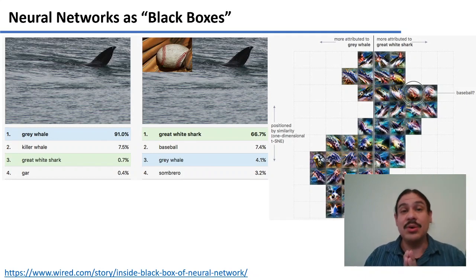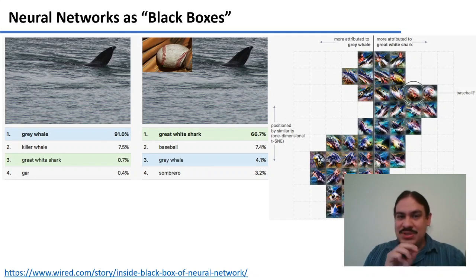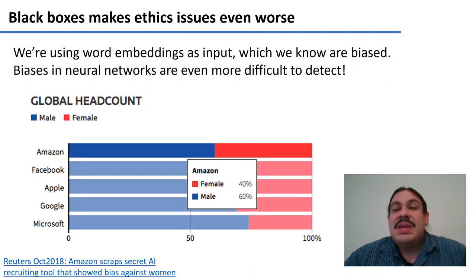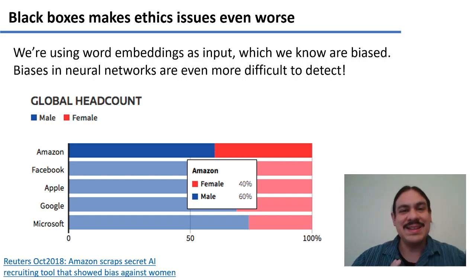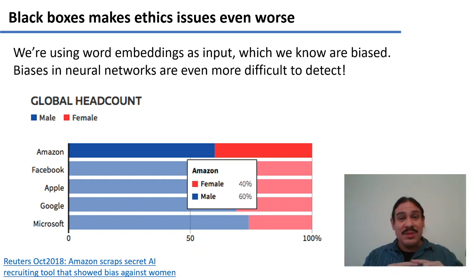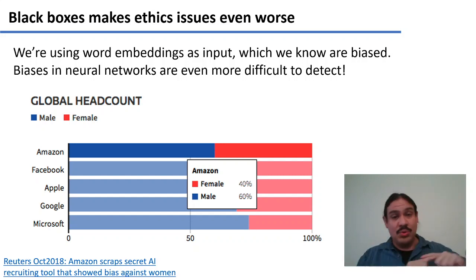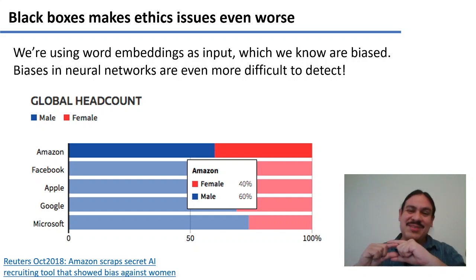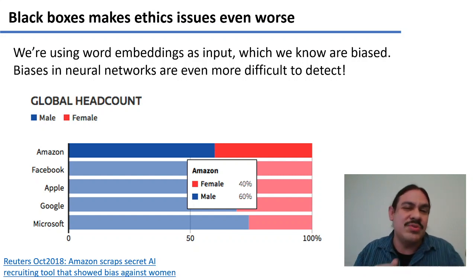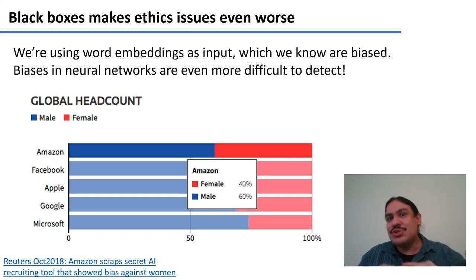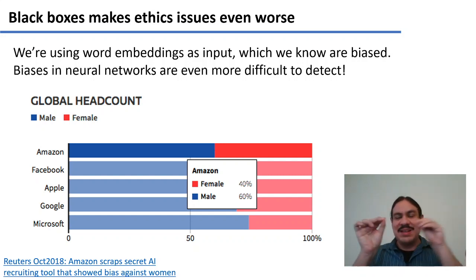Research is still ongoing to figure out exactly what it is that these networks are doing to the input to transform it into the output. Because it's so difficult to understand what they're doing, they're even more susceptible to biases. We're using word embeddings as the input — for example, all of our transformers use word embeddings like Word2Vec or GloVe, which is a different but similar kind of embedding — and we already know that these are biased to start with.